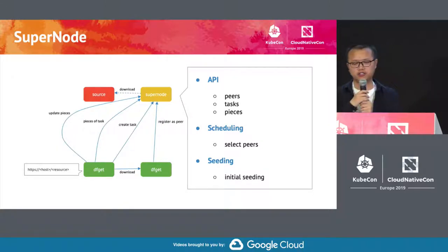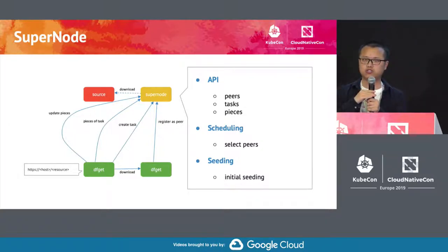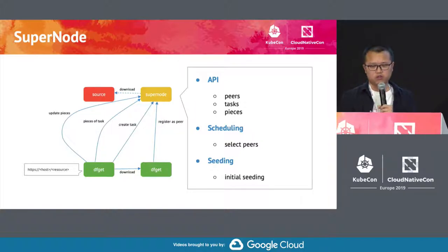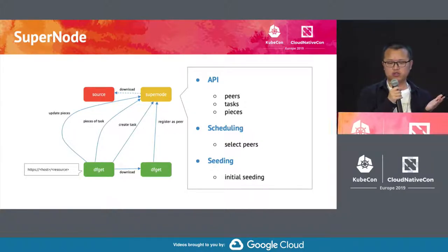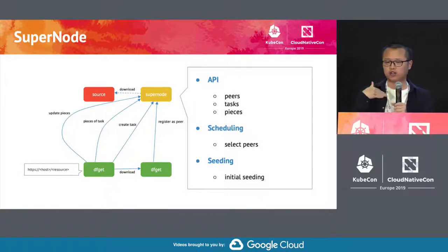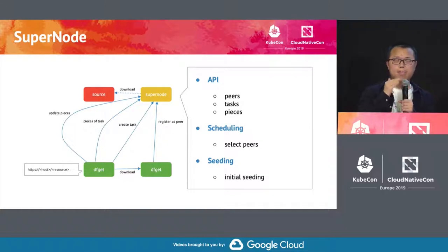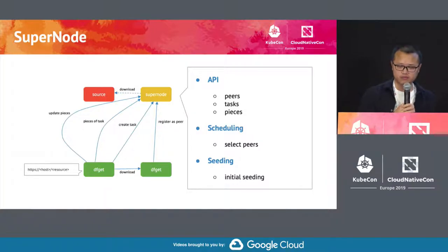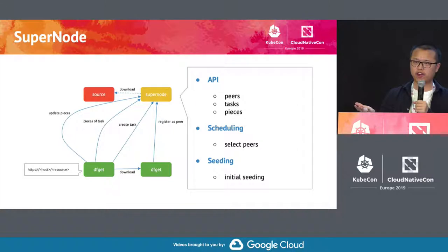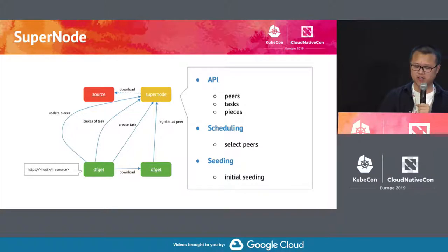But what's becoming more interesting is the scheduling part — how does the super node select a list of peers that is most efficient for you? There are many possibilities and many different algorithms we can use to reach the best utilization. So you don't have to always request a single peer, which would exhaust that one. Instead, we can always choose the peer with the least load to request from. And also, it can do seeding: if no one has the file, the super node can act as the first one to request from the source and then serve different clients.